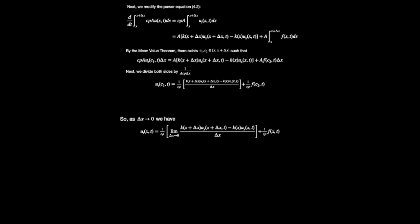First, the constants c1 and c2 are on an interval between x and x plus delta x. Since delta x is now going to zero, we're going to have to assume that that interval is now just x. That means c1 and c2 both equal x.